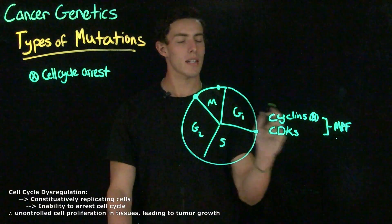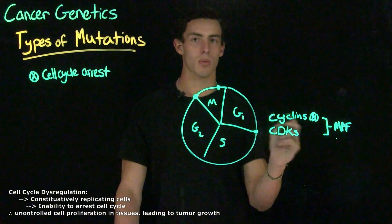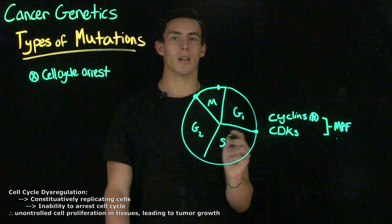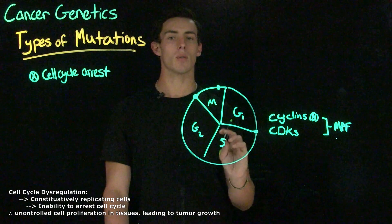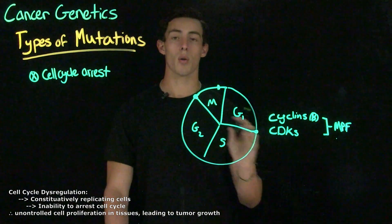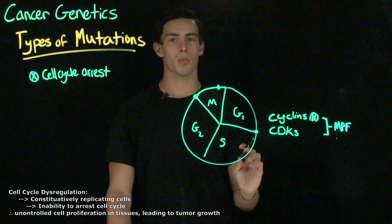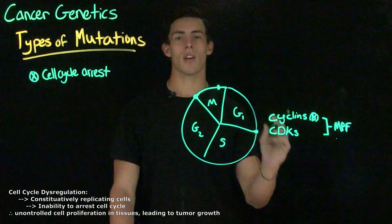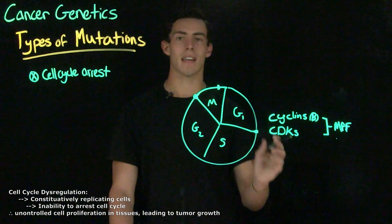If any of the proteins regulating the cell cycle are mutated, overexpressed, or underexpressed, this can cause changes that can lead to cancer.